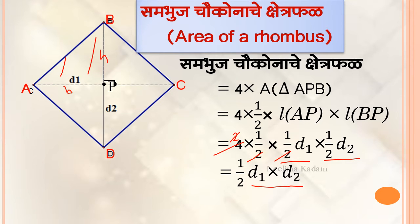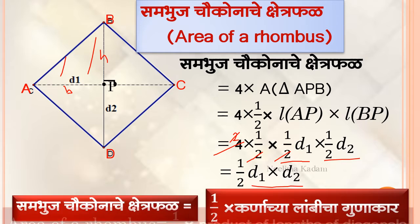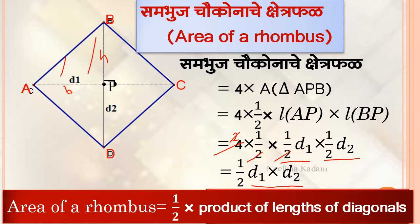Therefore, the area of a rhombus is equal to half into the product of its diagonals, where D1 and D2 are the diagonals. Area of rhombus equals half into product of the lengths of the diagonals.